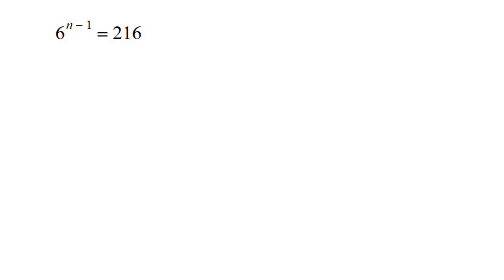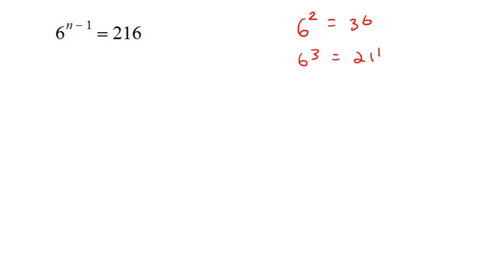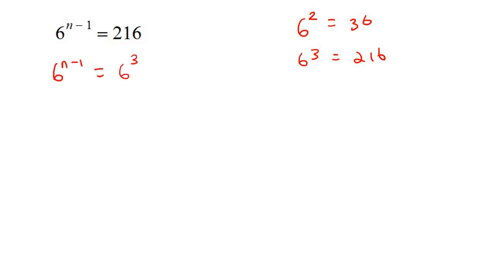Here's our next example. This number is not the same as this number, but we should know that 6 to the power of 2 is 36, and 6 to the power of 3 is 216. These are just numbers that you're going to get used to as you practice. So, what that means is I can say 6 to the n minus 1, and I can change this to 6 to the power of 3. Now, these numbers are the same, so I end up with n minus 1 equals 3. Solving, n would then be 4.